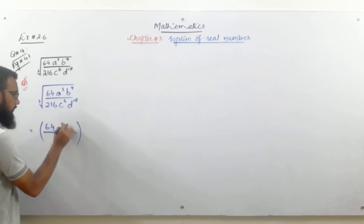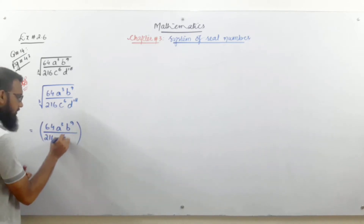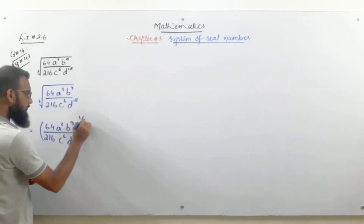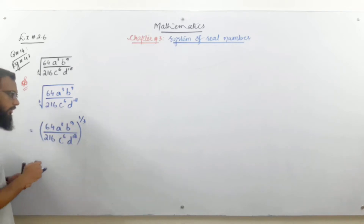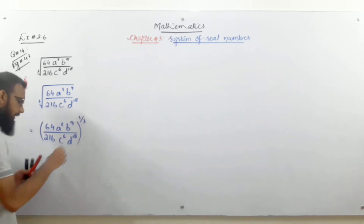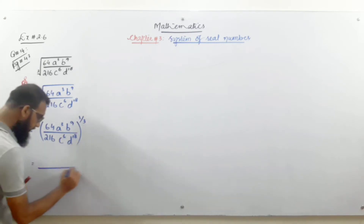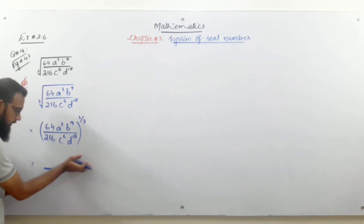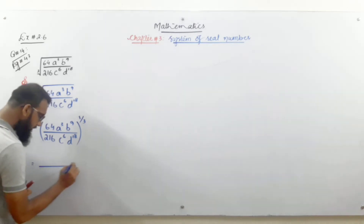So we have 64a^3 b^9 over 216 c^6 and d^18. What we do is replace the cube root with the power 1/3 outside the bracket. The 1/3 power outside the bracket will apply to all the elements inside the bracket one by one — each element gets power 1/3 applied separately.